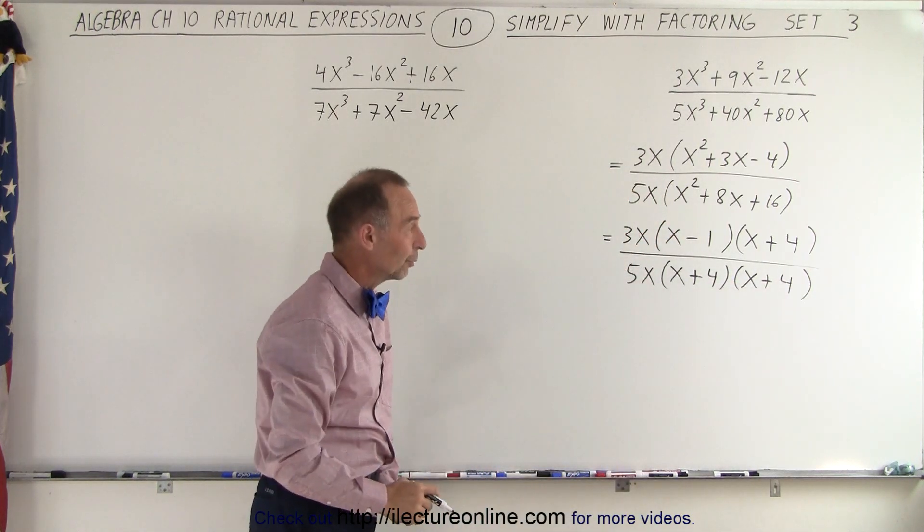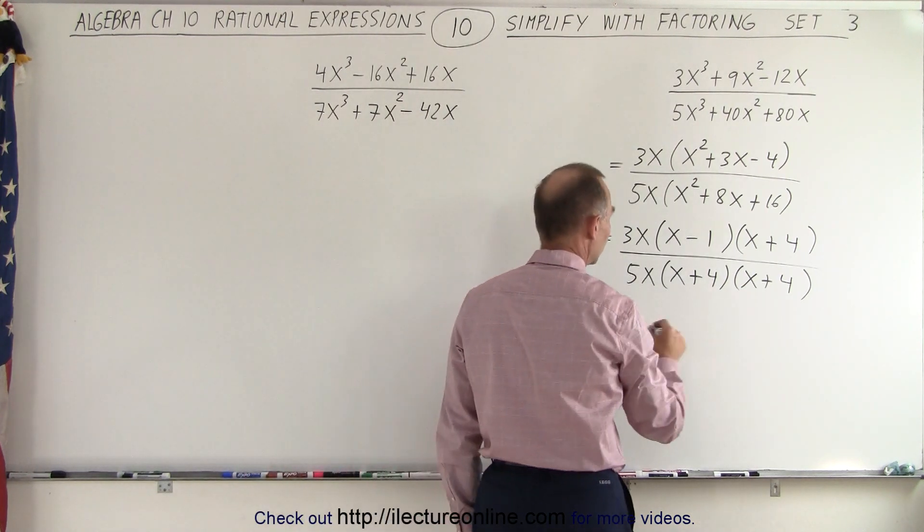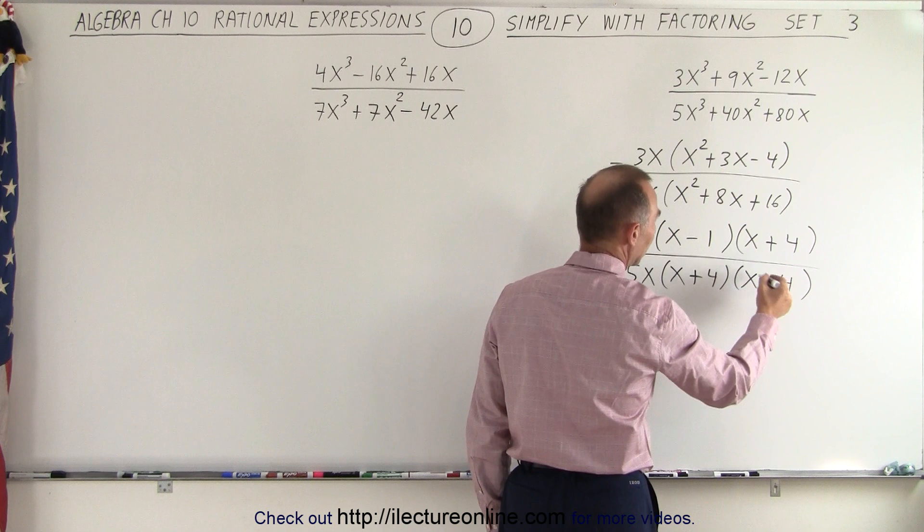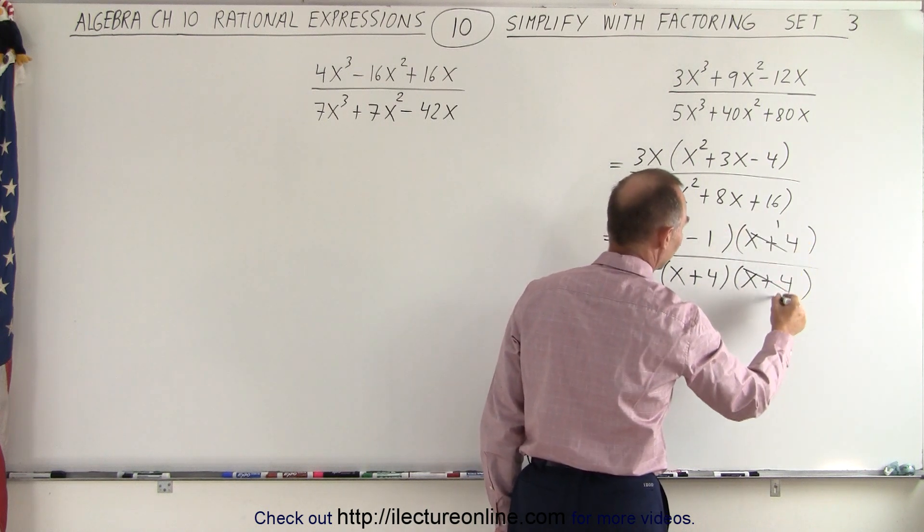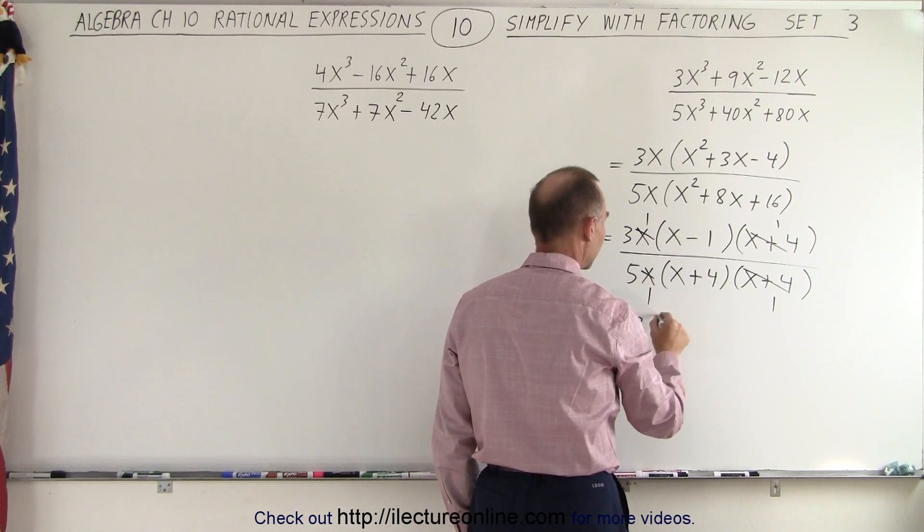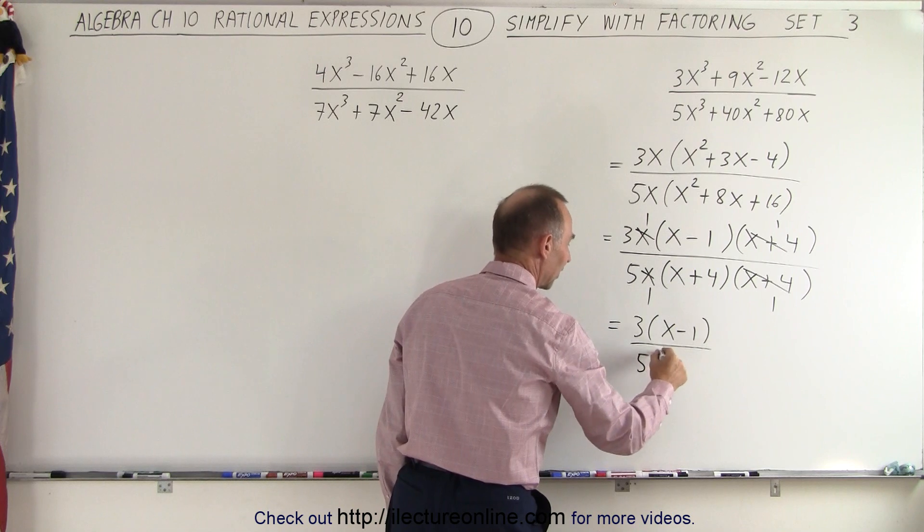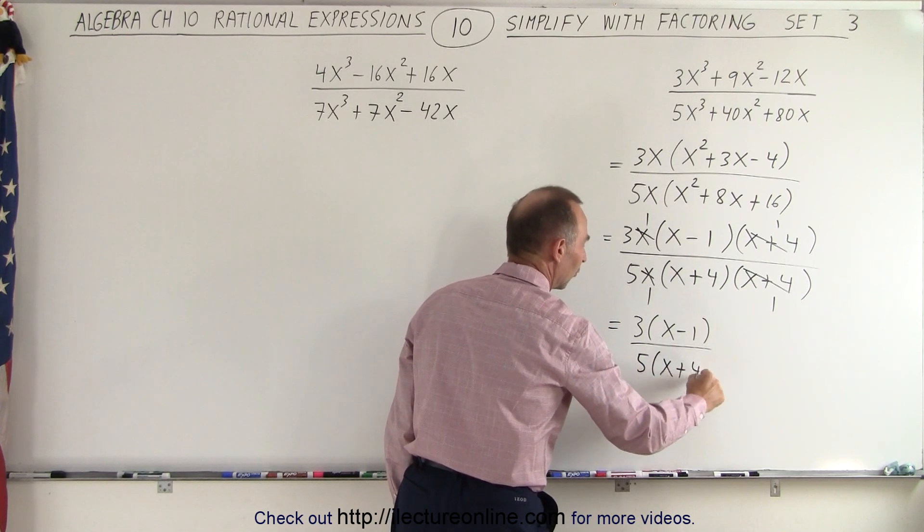Now we'll look for common factors. Notice in the numerator, we have an x plus 4. In the denominator, we have an x plus 4, so that cancels. And here we have an x and an x, so that cancels. And we're left with 3 times x minus 1 divided by 5 times x plus 4.